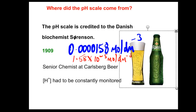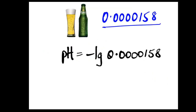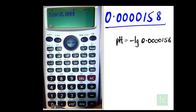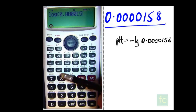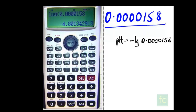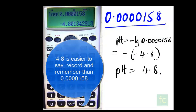A typical concentration of hydrogen ions might be 0.0000158 mole per cubic decimetre, or written in standard form, 1.58 × 10 to the minus 5 mole per cubic decimetre. Sorensen found dealing with these small numbers to be tedious. pH is the negative log of the hydrogen ion concentration. Taking the negative log of 0.0000158 gives minus 4.80 on the calculator, so minus by minus 4.80 — minus by minus is a plus — giving a pH of 4.80.